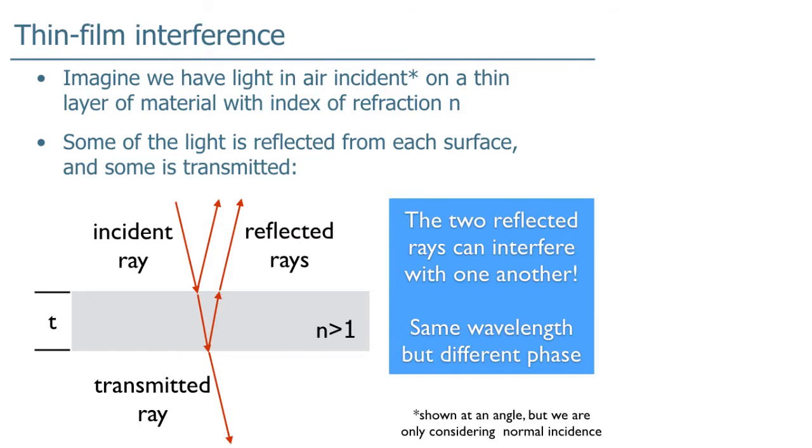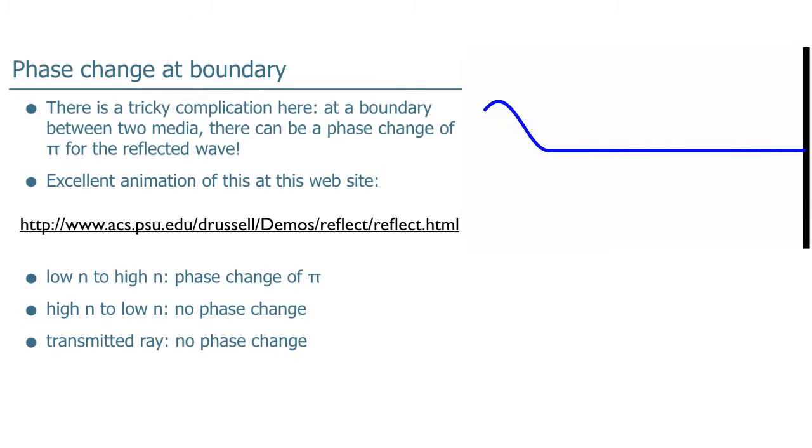If those beams are right on top of each other, which is the case for normal incidence, then the two reflected rays can interfere with each other. They have the same wavelength, but they have a different phase. They have a different phase for two reasons. Firstly, they have a different phase because the second one is coming from reflecting off this boundary here, and it has an extra path length of two times t. So that changes the phase, but there's another effect which changes the phase when you reflect off a surface. And there's a tricky complication. At a boundary between two media, there can be a phase change of pi for the reflected wave.